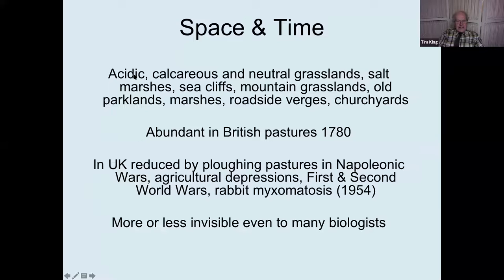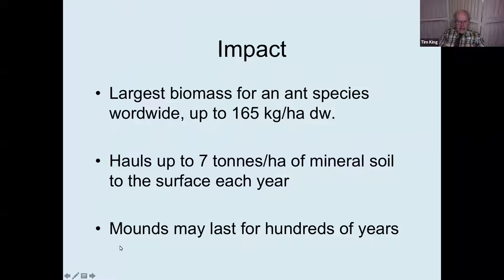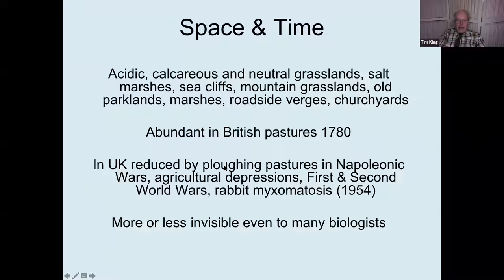These anthills occur in acidic, calcareous and neutral grassland, salt marshes, sea cliffs, mountain grassland, old parklands, marshes, roadside verges and churchyards. They used to be far more abundant. The old county agricultural reports from 1780 onwards each contain a massive chapter on how to get rid of anthills, which were regarded as reducing the productivity of pastures. There were specialised anthill ploughs, and in Leicestershire and Rutland it was reckoned that you could walk from one side of the county to the other by stepping from the summit of one anthill to another.